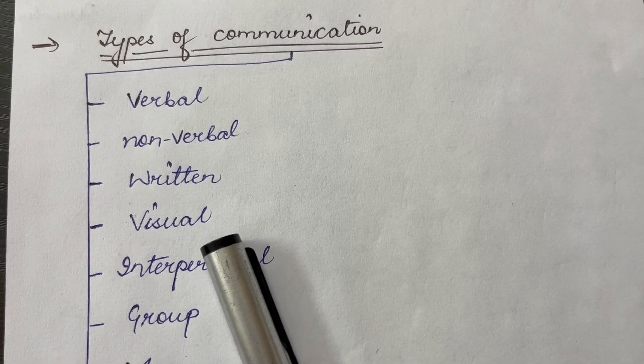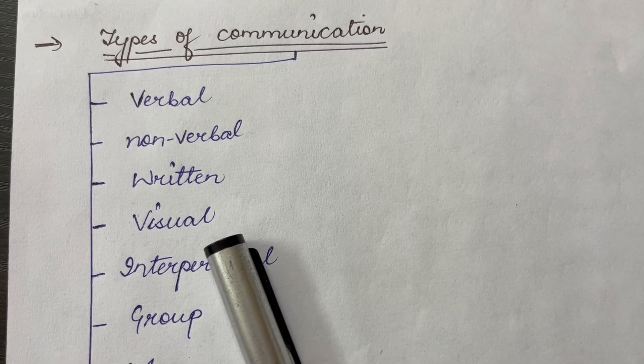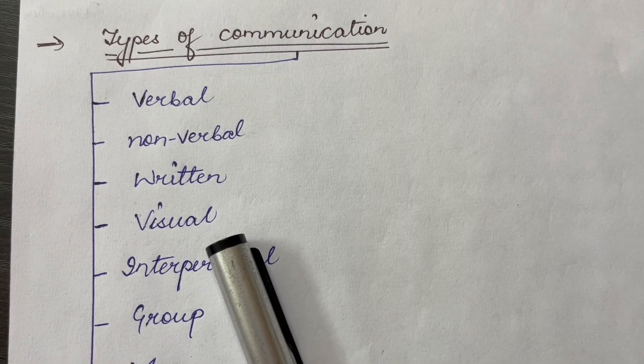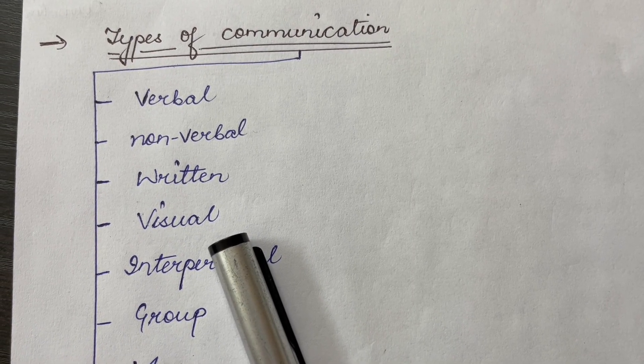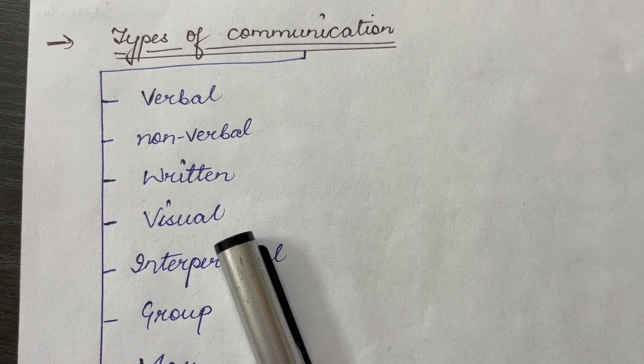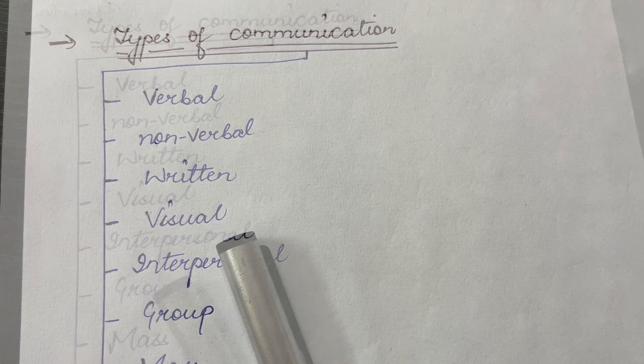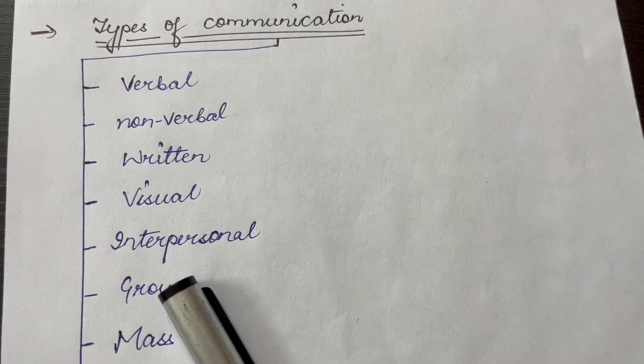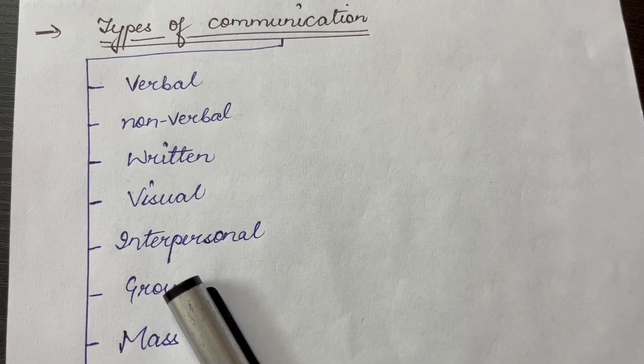Next is visual communication. Communication through visual aids such as charts, graphs, diagrams, maps, symbols and videos. Next is interpersonal communication. It means direct communication between individuals often in a one-on-one or small group setting.